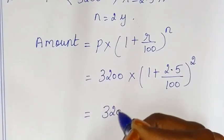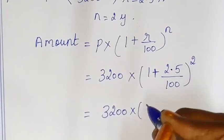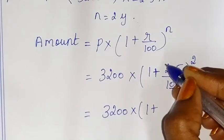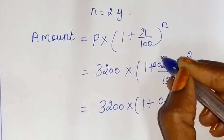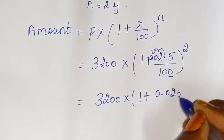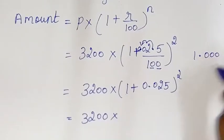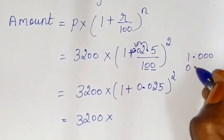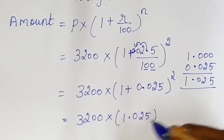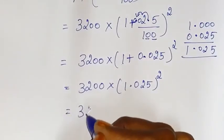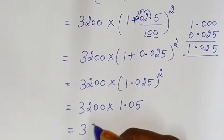So this is equal to 3200 into — here we have the decimal: 2.5 by 100 gives 0.025, and 1 plus 0.025 gives 1.025. So this is 3200 into 1.025 to the whole square.